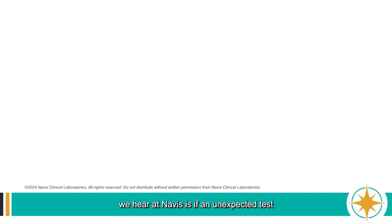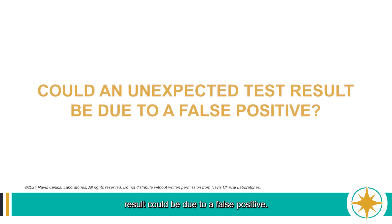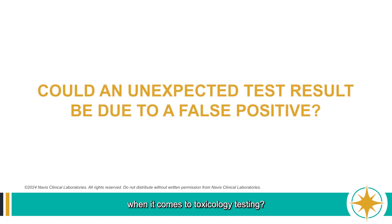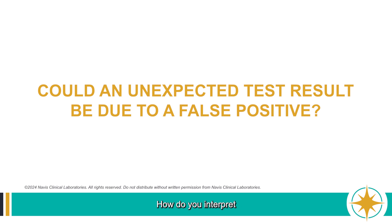One of the most common questions we hear at Navis is if an unexpected test result could be due to a false positive. But what exactly does that mean when it comes to toxicology testing? What is a false positive and how do they occur? How do you interpret your test results and determine if a result is truly a false positive?